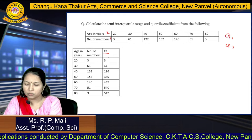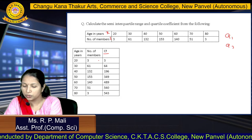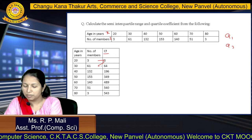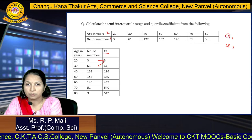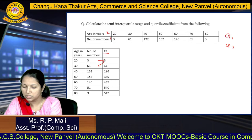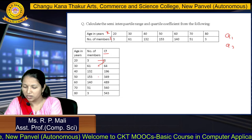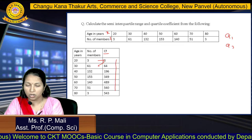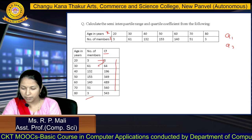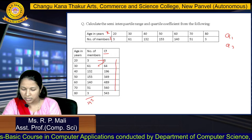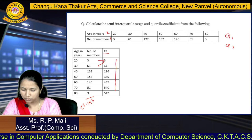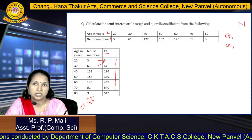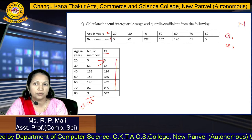We write the first frequency 3 as is, then 3 plus 61 equals 64, then 64 plus the next frequencies, building up the cumulative frequency column. The total number of members is the summation of F, which is N. Since this is a discrete series, we apply the formulas for Q1 and Q3 for discrete series. Q1 equals the size of the (N+1)/4th item. N is the summation of frequencies.